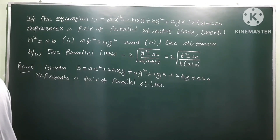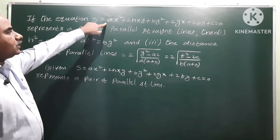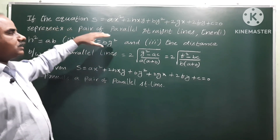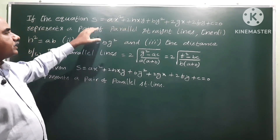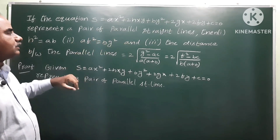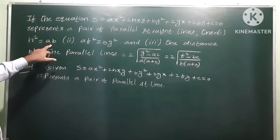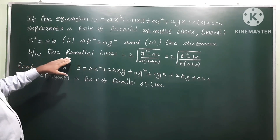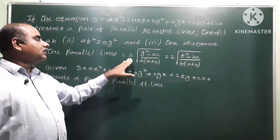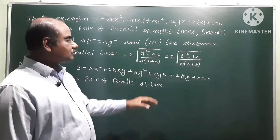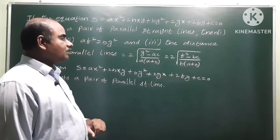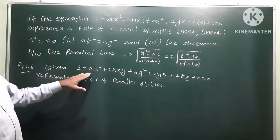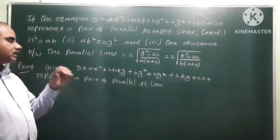Next theorem: if the equation S = ax² + 2hxy + by² + 2gx + 2fy + c = 0 represents a pair of parallel straight lines, the conditions are h² = ab, af² = bg², and we also need to find the distance between the parallel straight lines, which is 2√(g²−ac) / a(a+b) or 2√(f²−bc) / b(a+b). We need to prove these.